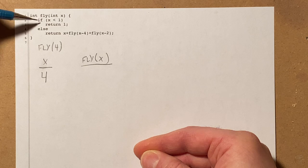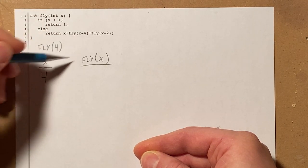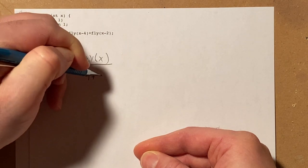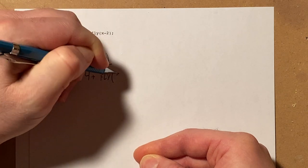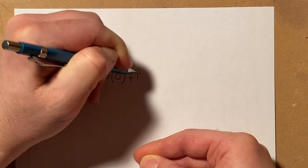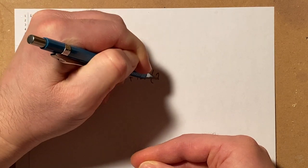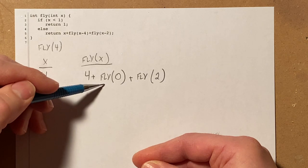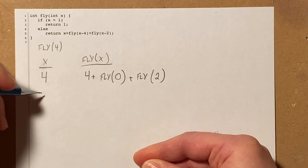So when x is 4, if 4 is less than 1, that's false. So we're going to return x, which is 4, plus fly of x minus 4. 4 minus 4 is 0. Plus fly of x minus 2. 4 minus 2 is 2. And then for each call to fly in this column, I'm going to create another entry for x and complete it. So I need one for 0, and I'll need one for 2.